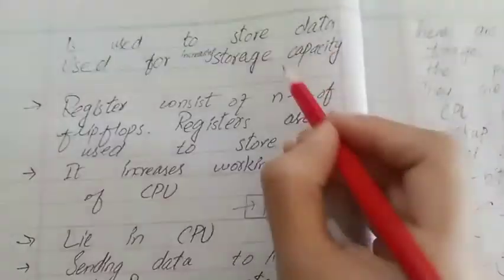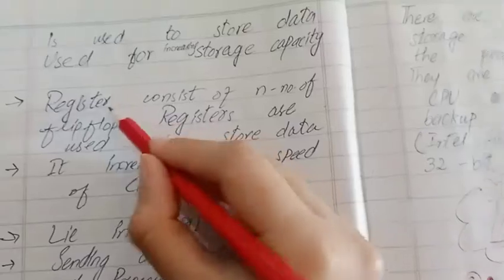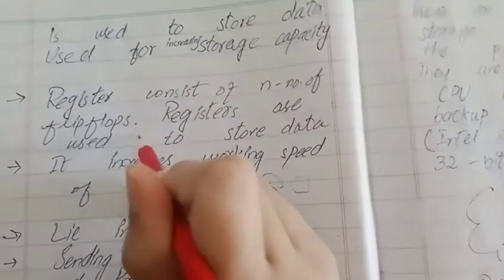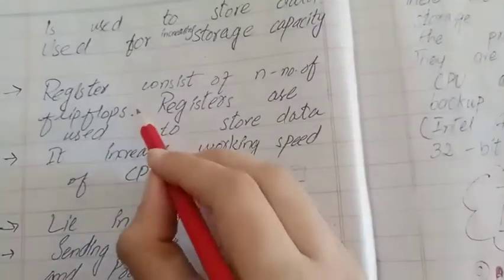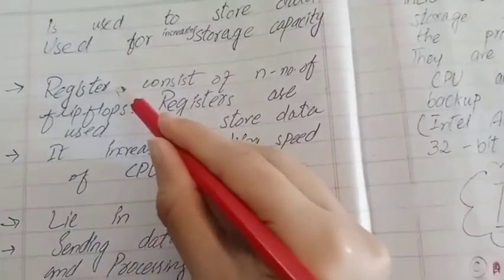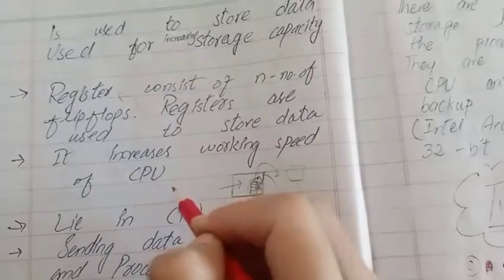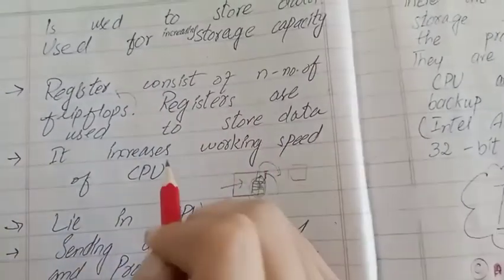In the register, n number of flip-flops are used. Registers are used to store data. Flip-flops are used to make registers. Registers increase the working speed of CPU.